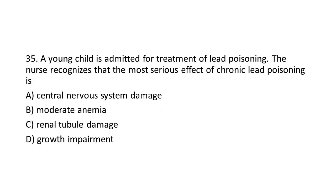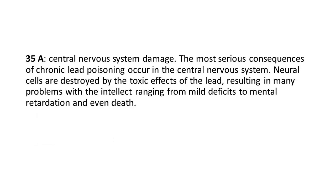Question 35. A young child is admitted for treatment of lead poisoning. The most serious consequences of chronic lead poisoning occur in the central nervous system. Neural cells are destroyed by the toxic effects of the lead, resulting in many problems with the intellect ranging from mild deficits to mental retardation and even death.